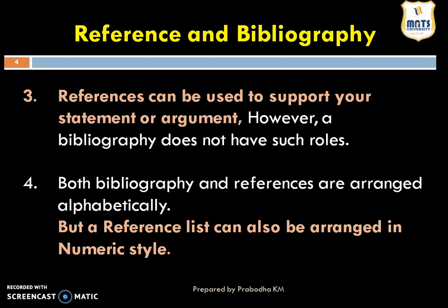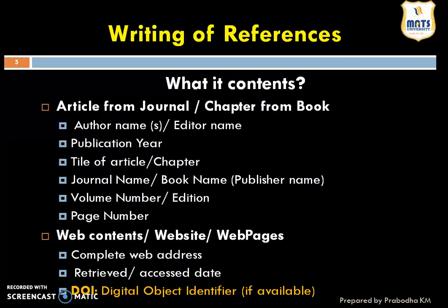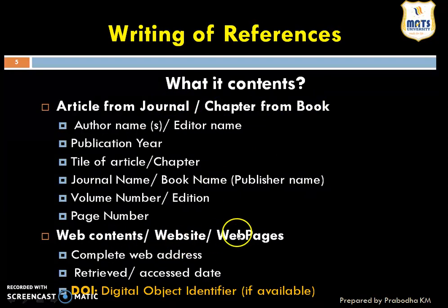The fourth difference is that both bibliography and references are arranged alphabetically, but a reference can also be arranged in numeric style. From these differences, we can see that references are more accurate while writing scientific content. The content we choose or refer for scientific writing may be a journal, a book chapter, or web content, websites, or web pages.